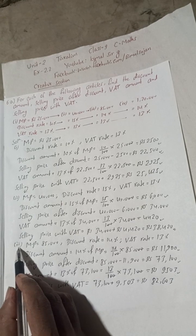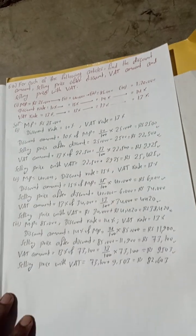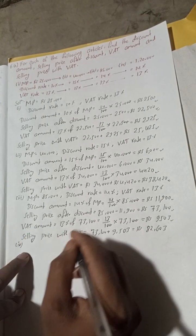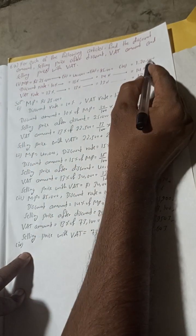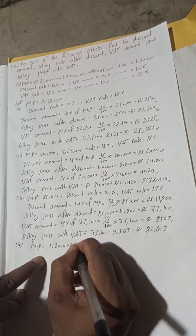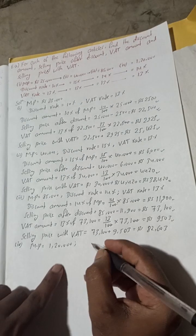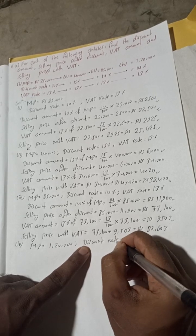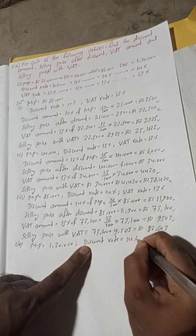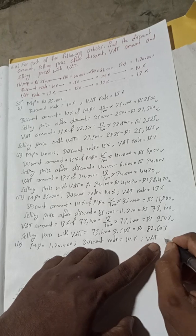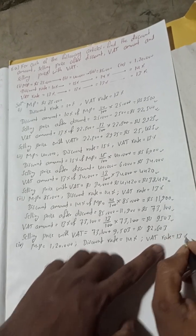Now number 4. In the 4th number, marked price is given as 1,20,000. Discount rate is given here as 14%. VAT rate is given as 13%.